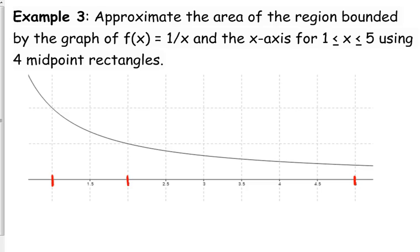So, as usual, let's go ahead and start by splitting up our interval into our four even partitions. So, we've got from 1 to 2 is our first partition, 2 to 3 is the second one, 3 to 4 is the third one, 4 to 5 is the fourth one.